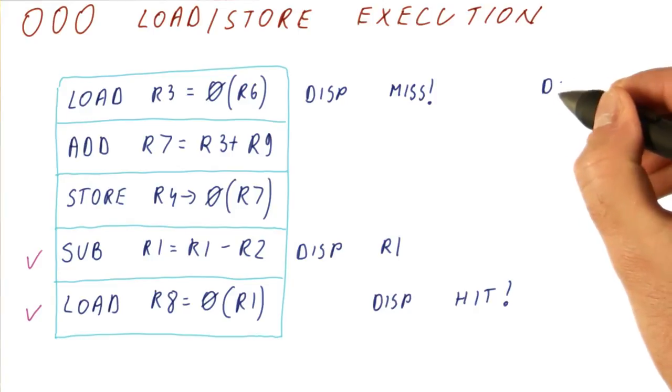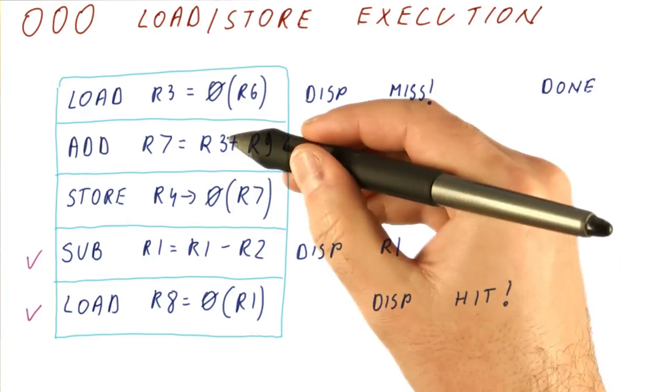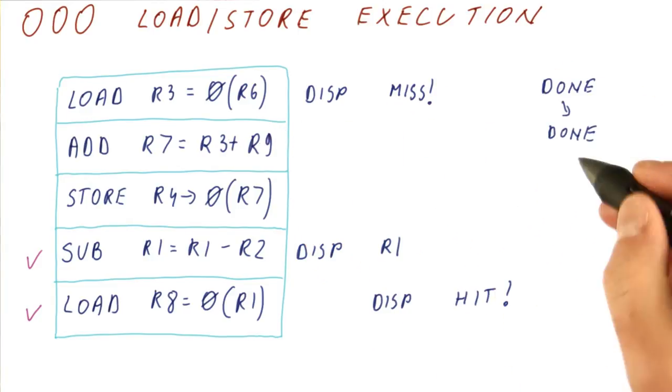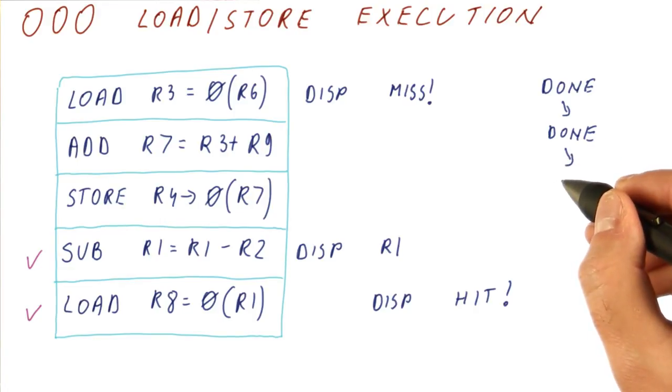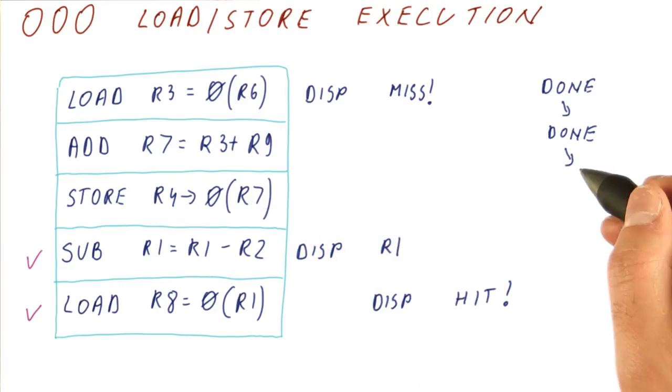Eventually, let's say that this load is done. Now, we produce R3, feed it to this add. The add is going to be done very soon afterwards. And now, we feed the R7 to the store. And now, let's say that this was some address x that we have accessed here.